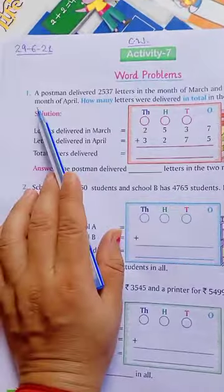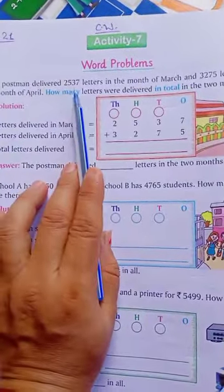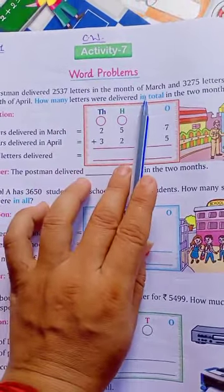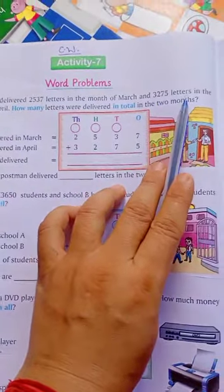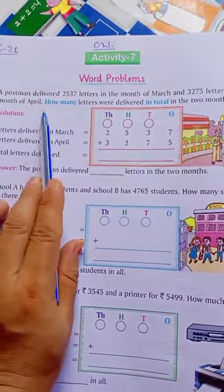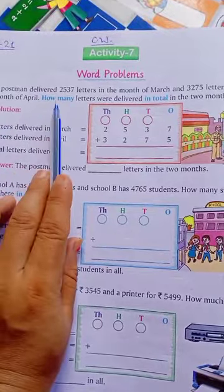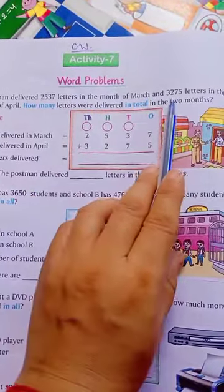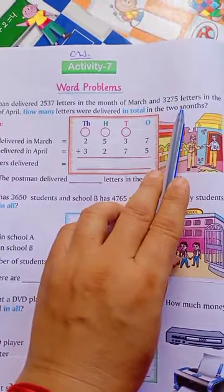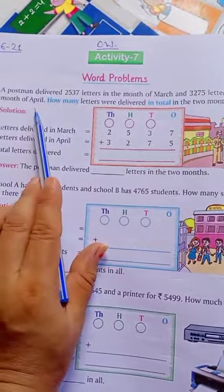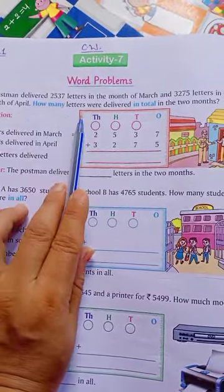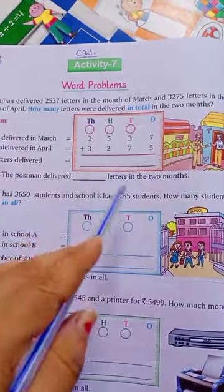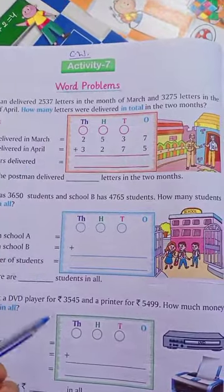And in activity number 7, you have given word problems. Okay. Now question number 1 is a postman delivered 2,537 letters in the month of March and 3,275 letters in the month of April. A postman delivers these letters in March and 3,275 letters in April. How many letters were delivered in total in the 2 months? We need to find the total letters delivered in both months.